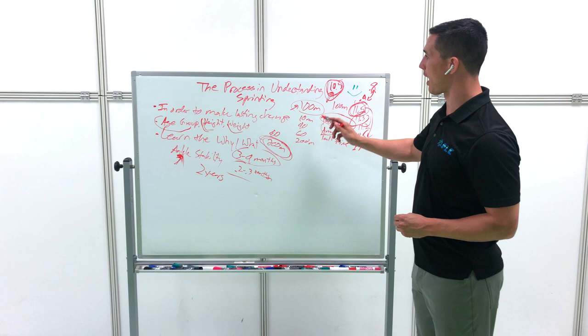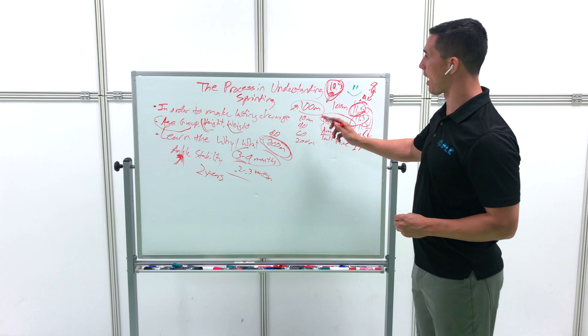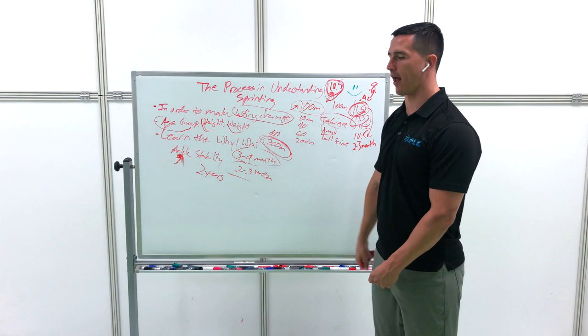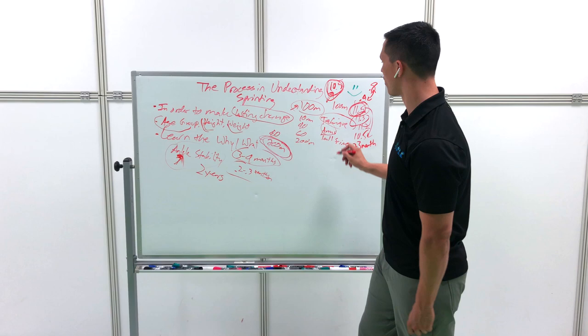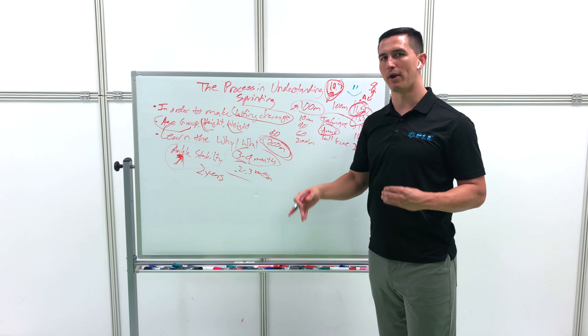In order for you to actually create lasting change, you got to know the why. You got to know the what. You got to know why you're doing what you're doing, why you're doing what exercise you're doing. If you're working on ankle stability, why are you working on ankle stability? If you're working on your arms, why are you working on your arms? Actually know why. Tell me a number, an actual numerical reason why.